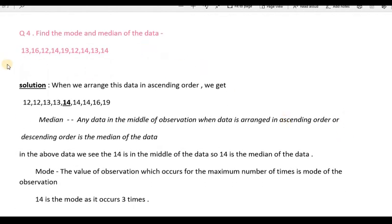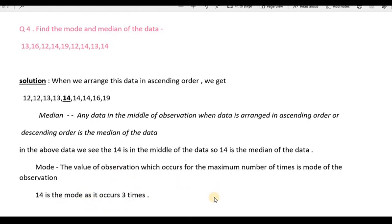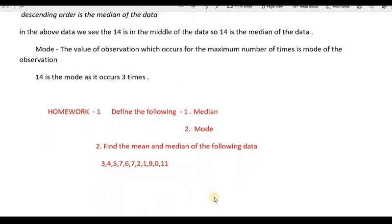Question number 4. We have to find the median and mode of the data. Arranging all the data in order, we see that 14 is in the middle, so 14 is the median. For mode, 14 occurs the maximum number of times, so the mode is also 14.